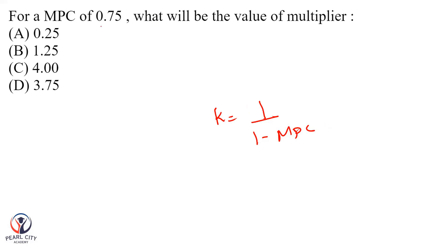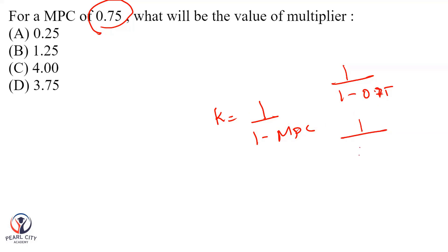We need to calculate using MPC: 1 divided by 1 minus 0.75, which gives us 1 divided by 0.25, so the answer is 4.